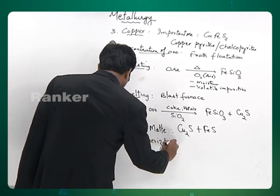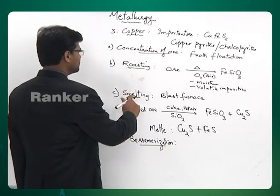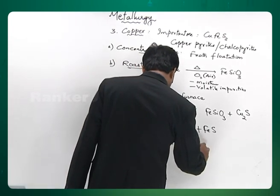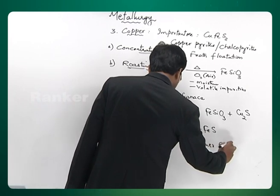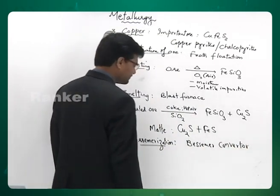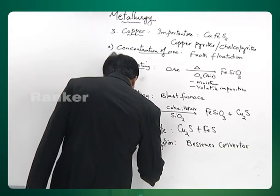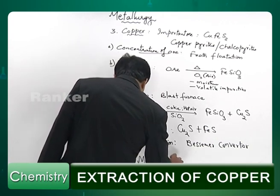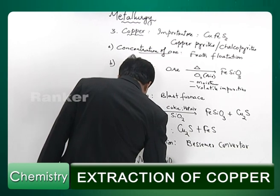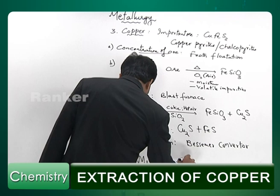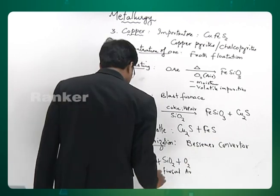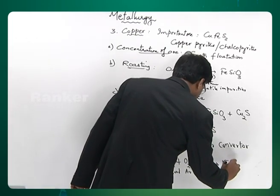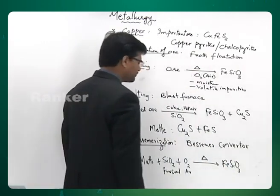The next step is Bessemerization. After smelting, we use a Bessemer converter. Here we take MAT, which consists of Cu₂S and FeS, add fine sand, blow air, and heat it. The Fe will be lost as FeSiO₃.